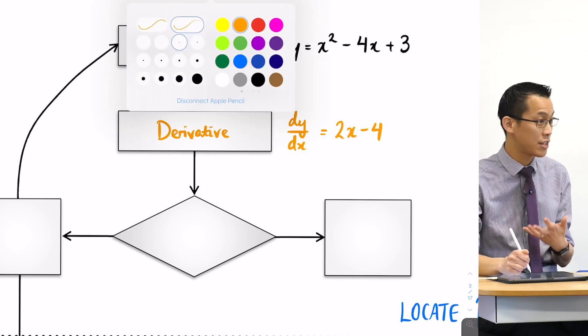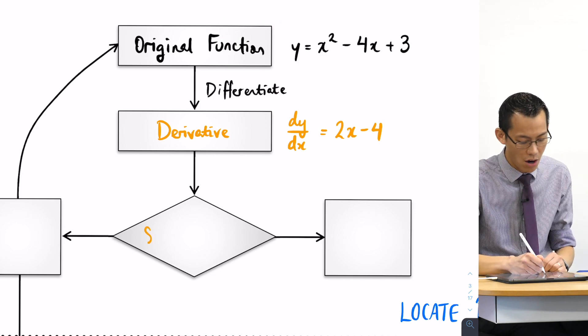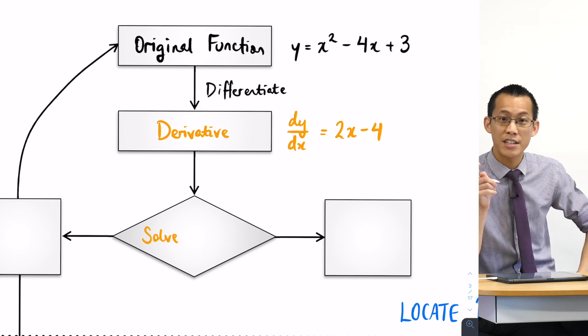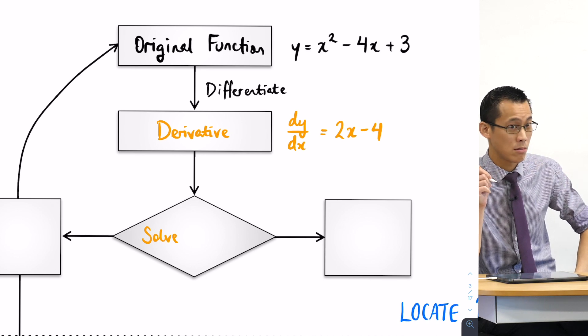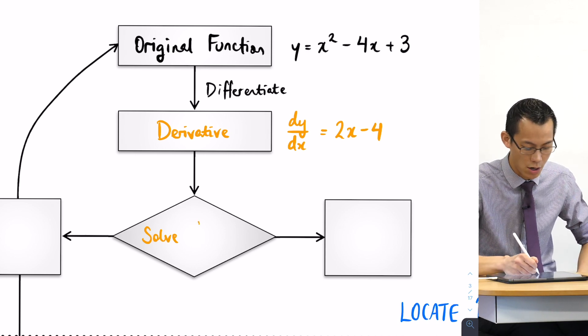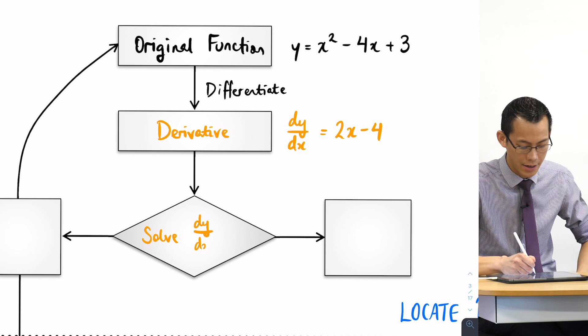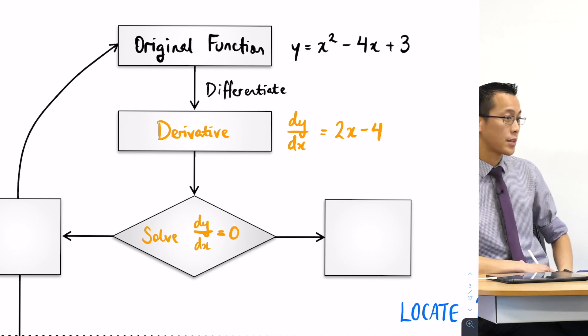I wonder if you recall the next thing that you do with that derivative. You're looking for stationary points, you're going to solve when is that derivative equal to zero. You're going to solve dy/dx equals zero.